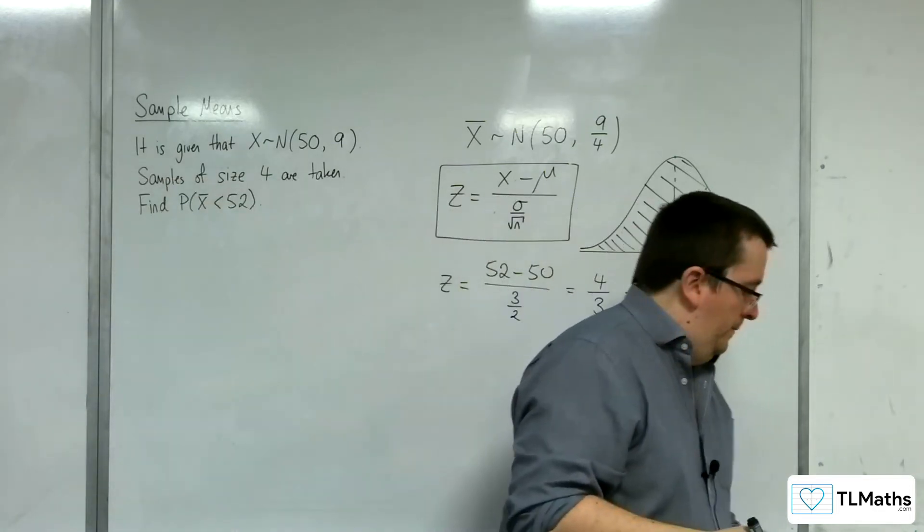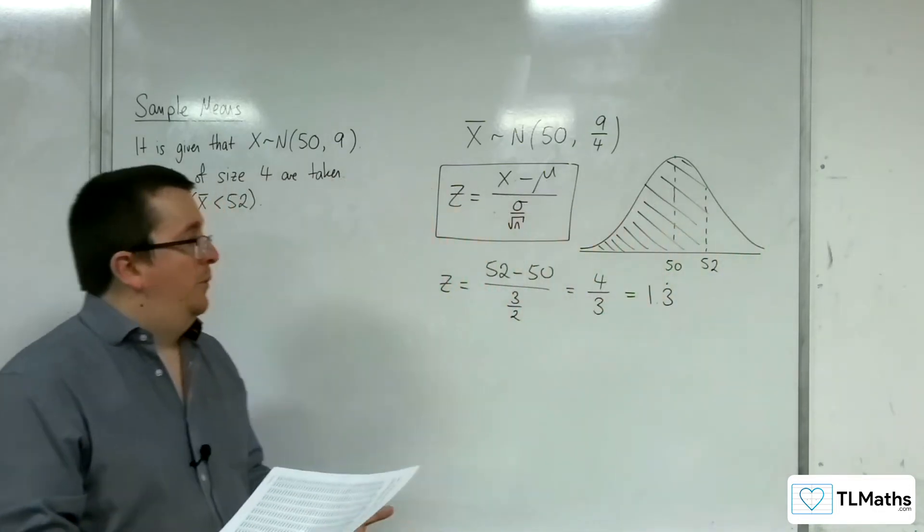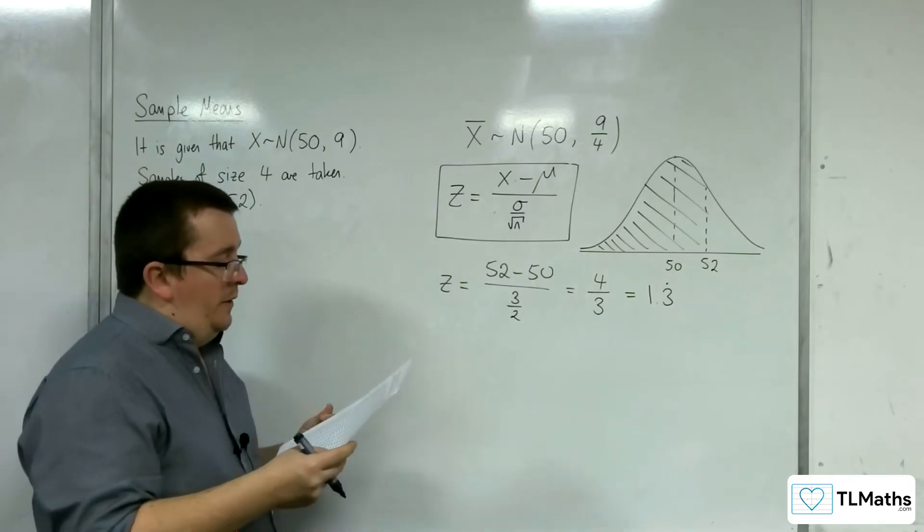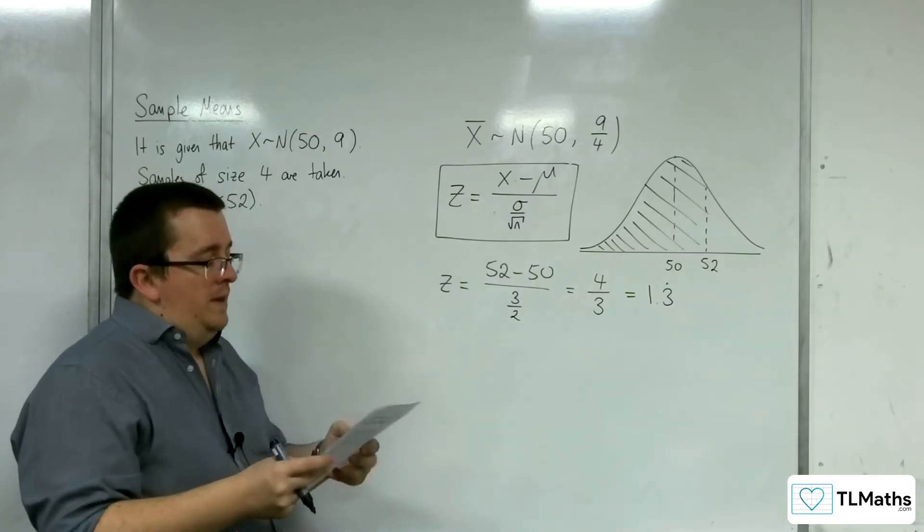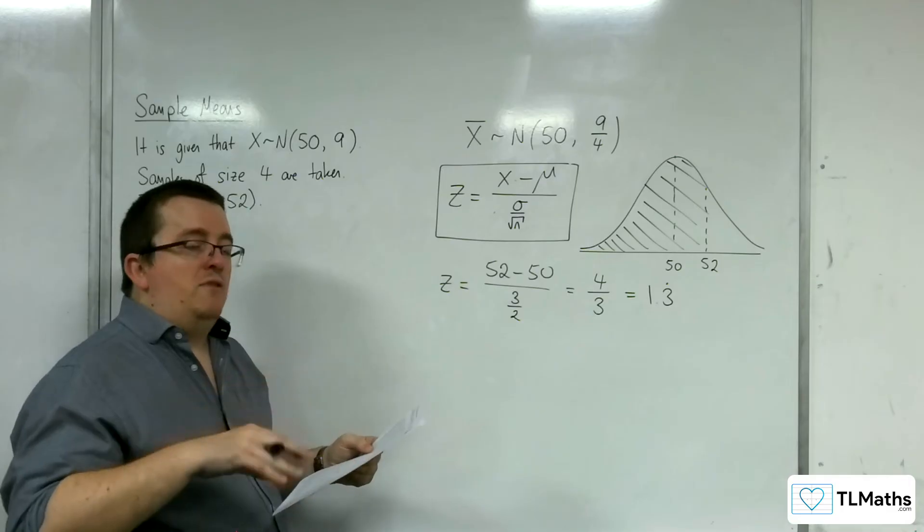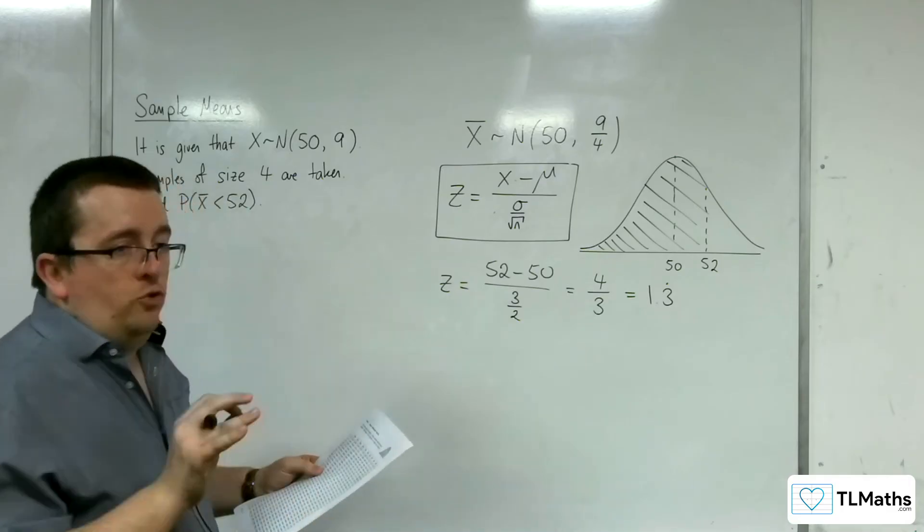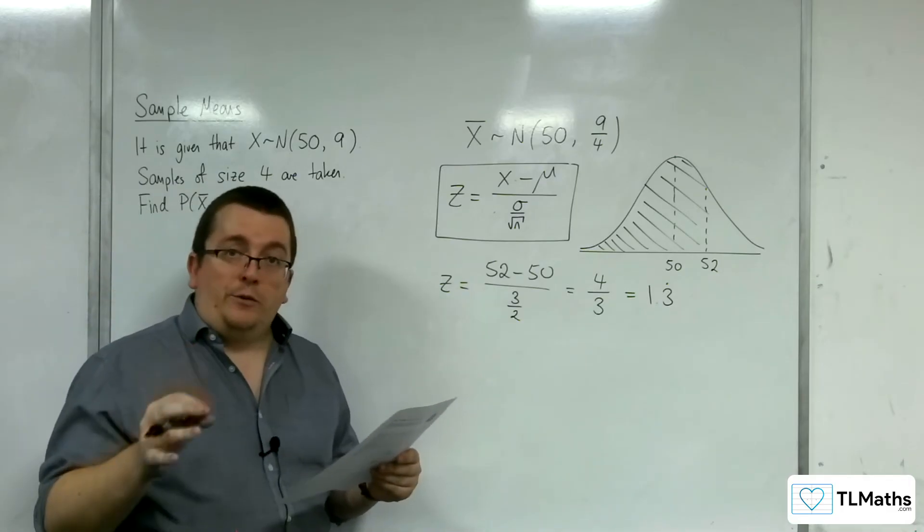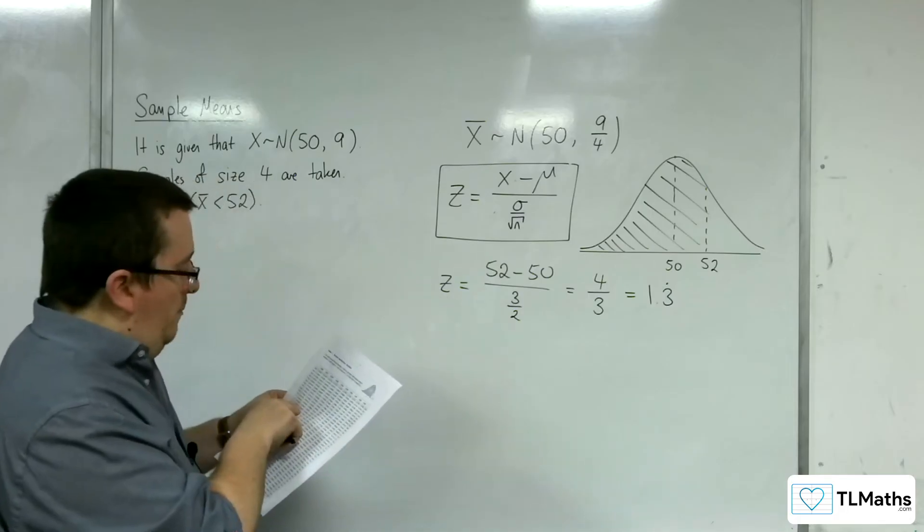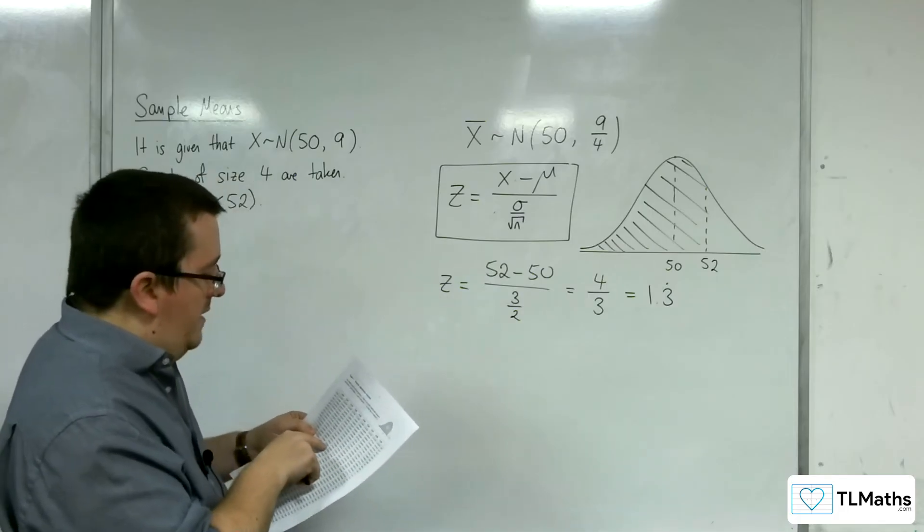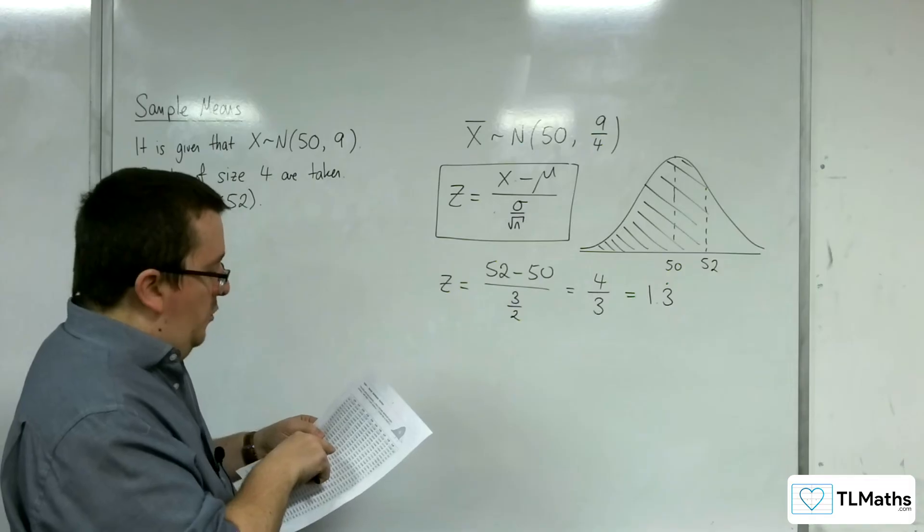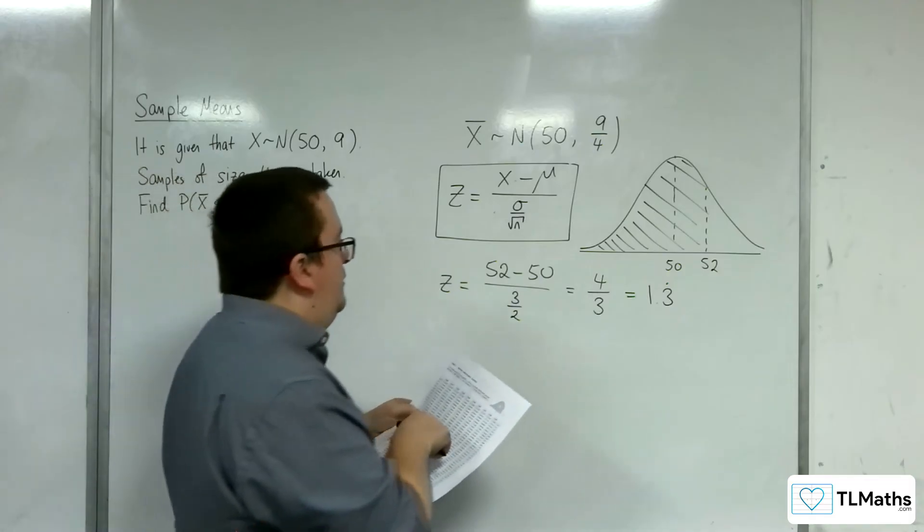So, from the tables, what I now need to do is find 1.3 recurring. The problem is that 1.3 recurring isn't there, so I've got to just try and get as close to the value as I possibly can. So, 1.33, I can get to, which is 0.90824.